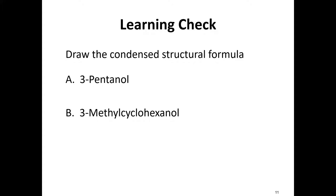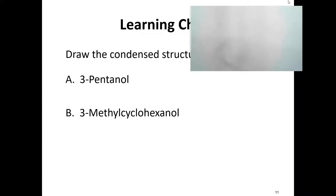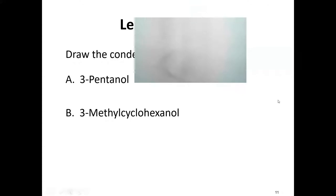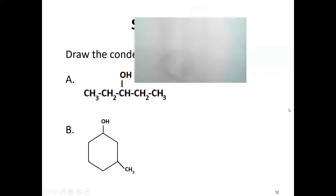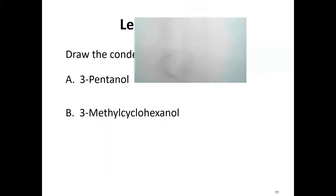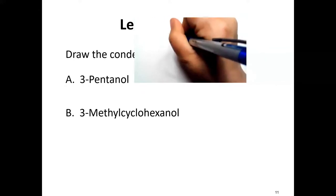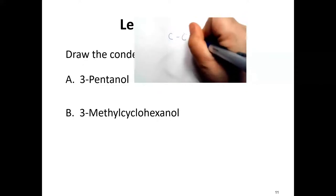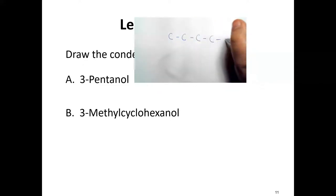Let's draw some. We're going to draw 3-pentanol and 3-methylcyclohexanol. For 3-pentanol, we start with the base name: pent means five carbons connected together. There's no cyclo in the name, so it's a straight chain. We draw five carbons: one, two, three, four, five.